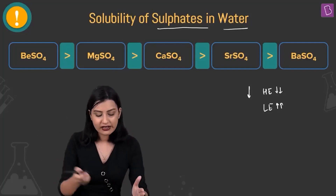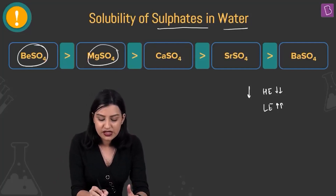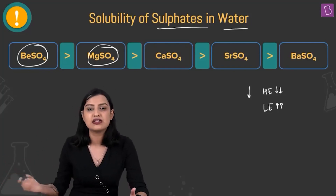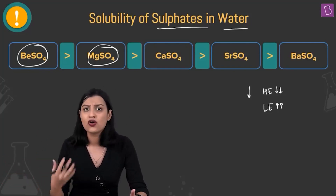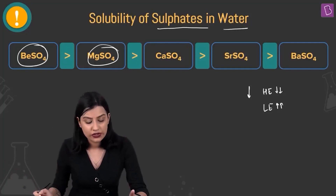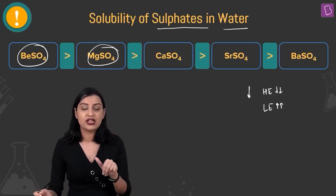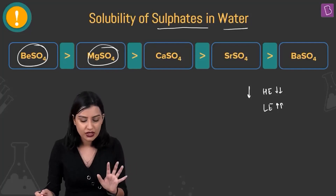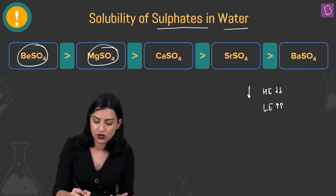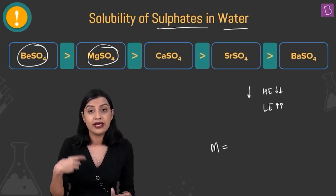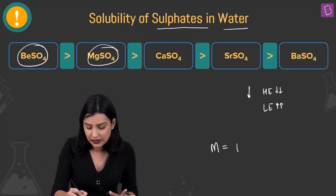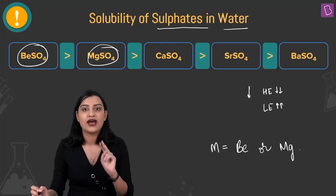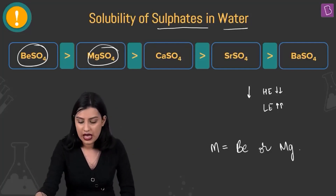Practically speaking, beryllium sulfate and magnesium sulfate are the two that are soluble in water. After these, we start seeing sparingly soluble or almost insoluble salts. So from the soluble sulfate clue, I can narrow metal M down to either beryllium or magnesium.